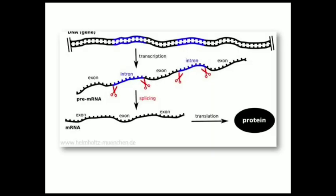What is the purpose of introns in the gene sequence if they do not code any protein? Although they do not code any protein product, they are an integral part of gene expression regulation. Some introns themselves encode functional RNAs through further processing after splicing, generating non-coding RNA molecules. So introns can function as and code for functional RNAs.